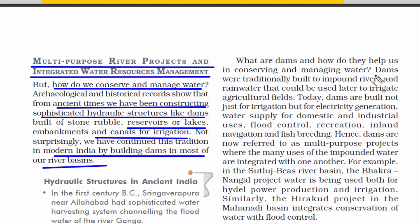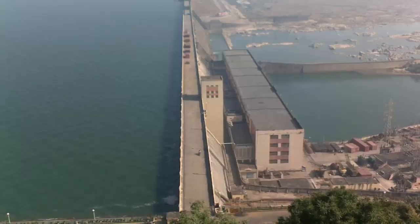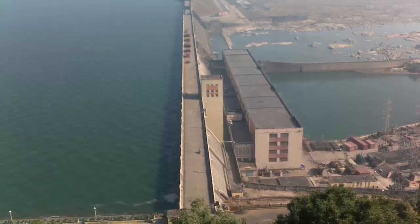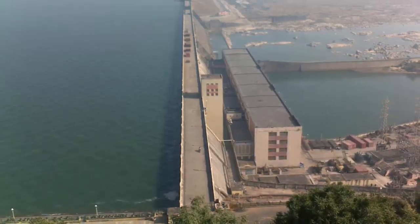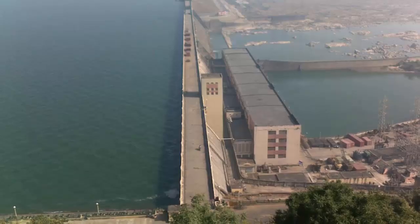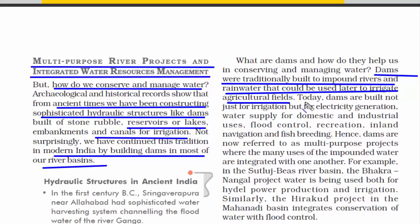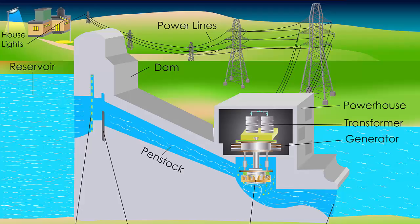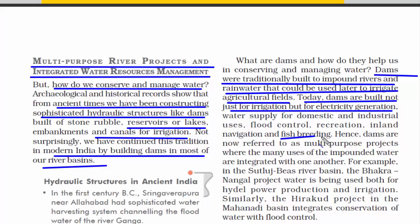Let's look at the purpose of a dam. Dams were used to impound rivers — to stop the river and accumulate water — and also to accumulate rainwater, which can later be piped out for irrigation and other purposes. Today, dams also serve electricity generation and fish breeding. That is why today dams are referred to as multipurpose projects.